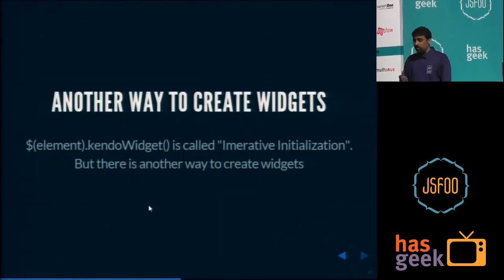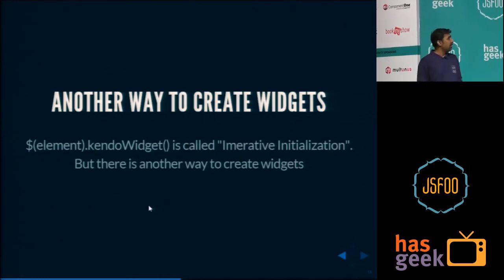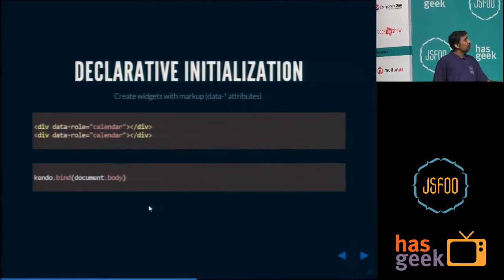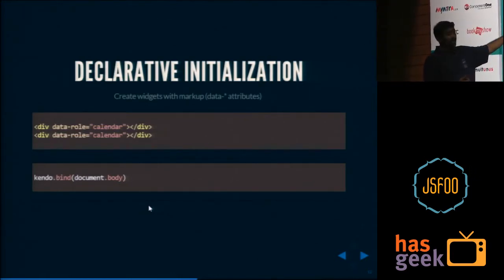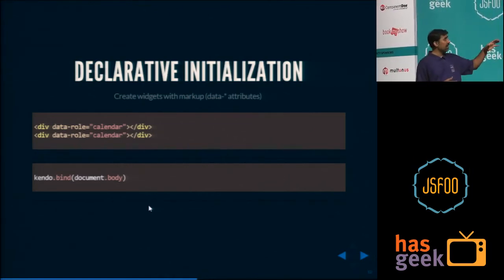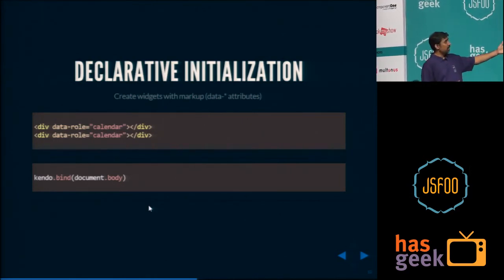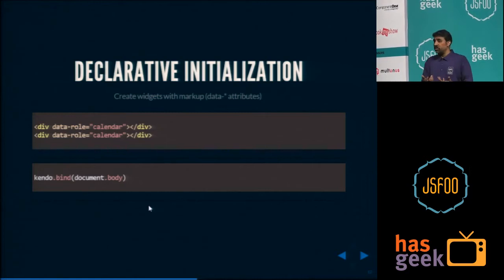So another way to create widgets — apart from the JavaScript way I just showed — that's the imperative way: dollar element dot kendo widget, called imperative initialization. But we also support declarative initialization — the MVVM way of doing things. It's completely HTML5. You use data-role and then specify which control or widget you need. Data-role calendar, and then one line of code — kendo.bind on that particular element, maybe document.body — converts it into your widget. As soon as you call kendo.bind, it looks at the divs where the data-role attribute is present, and if it's a Kendo control, it instantiates it.